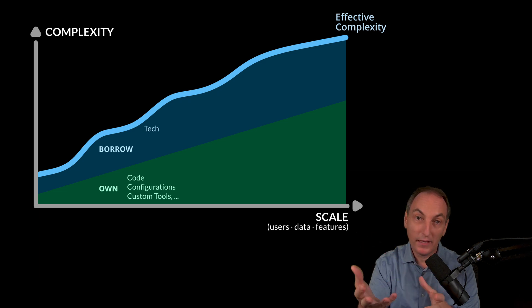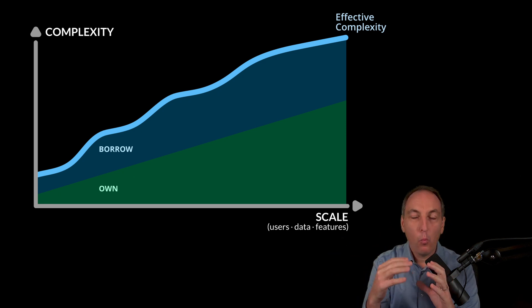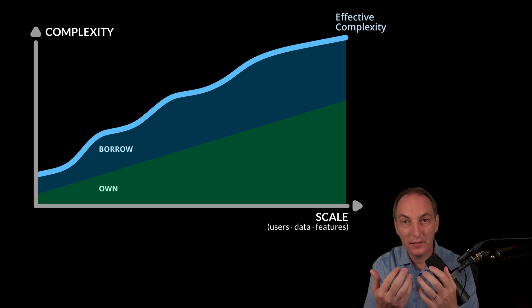Now the question is where do we put the line? One tendency is to say, well, we want to code as less as we can and own as less as we can, so we're going to use all-in-one solutions such that we don't have to learn too much and we're going to be very low.